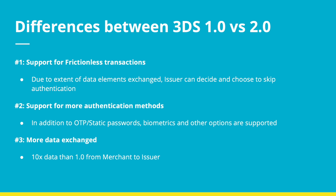There are more than about 150 data elements, something around that, that gets exchanged between the merchant and the issuer, and there are a lot of optional and conditional data elements in this which gets exchanged for the issuer to take the decision. These are the key differences between 1.0 and 2.0.